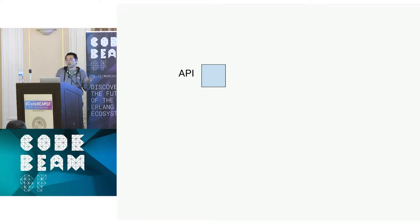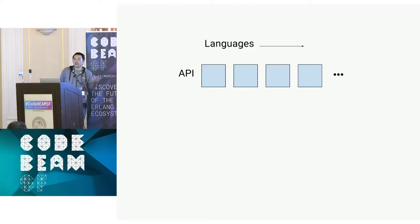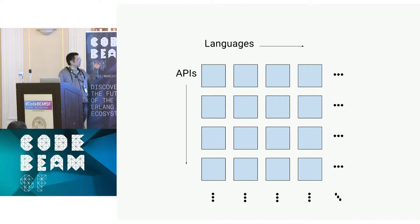But a customer comes in and says they like your product, but do you have a Java client? So we go write that Java client. And then we get another customer that says, how about Go? Very quickly we need to support a bunch of languages, and we may or may not have language expertise in those languages. Our next product comes up with a great new idea — a new service with an API we need to support, and another, and another. Quickly this can get out of hand.